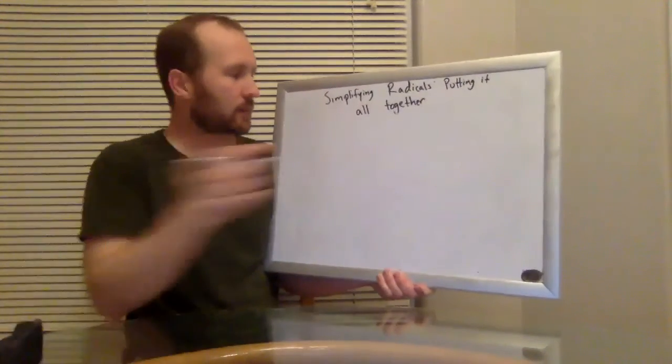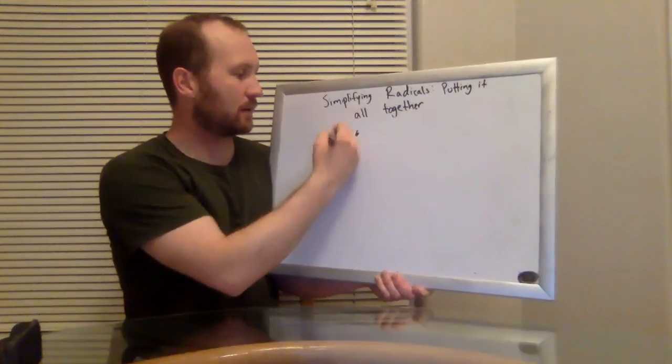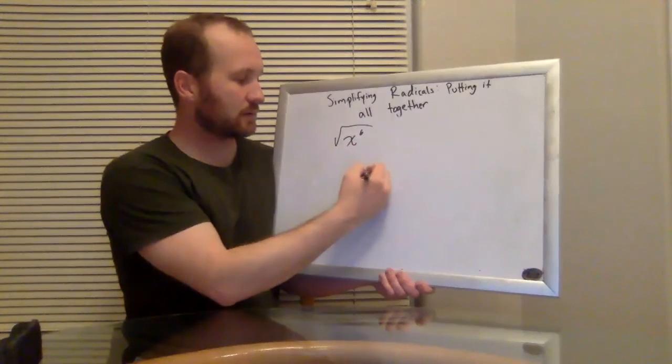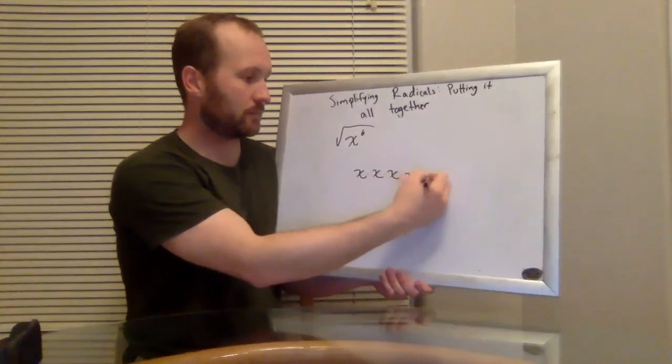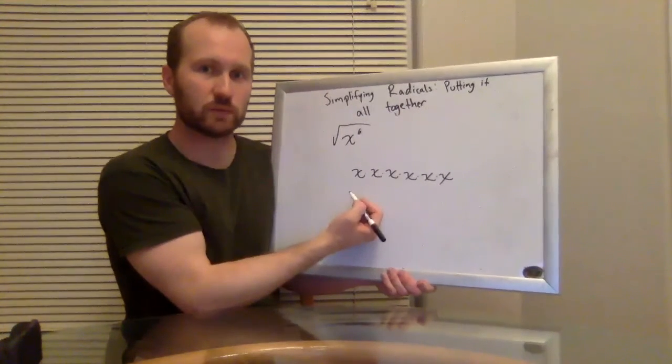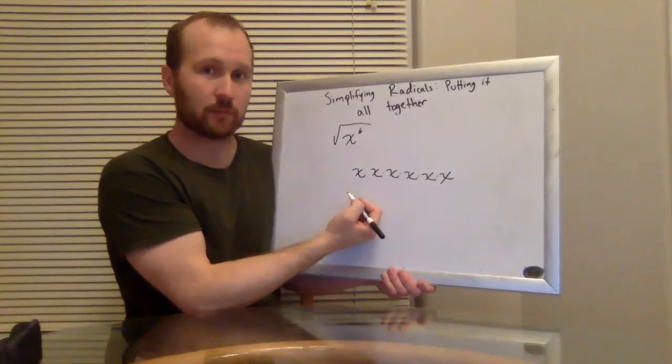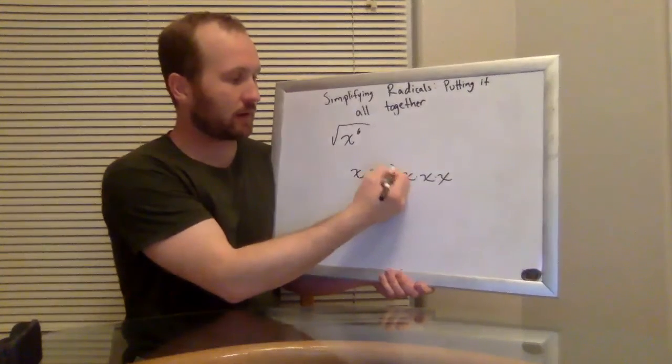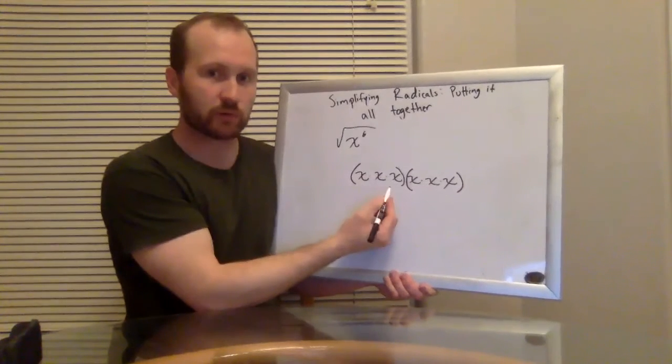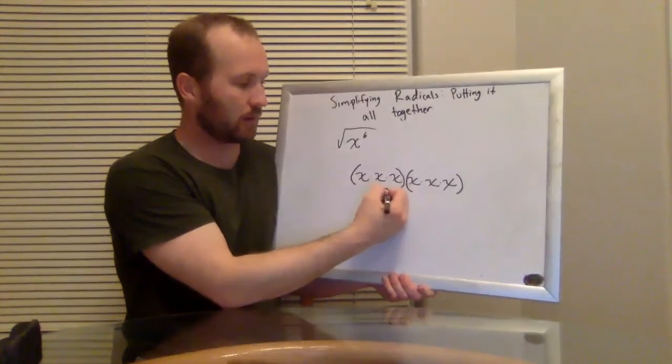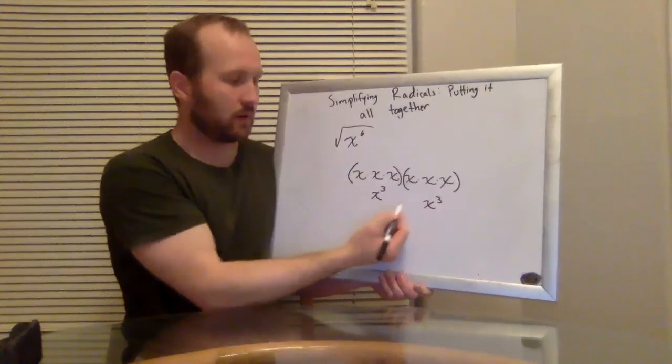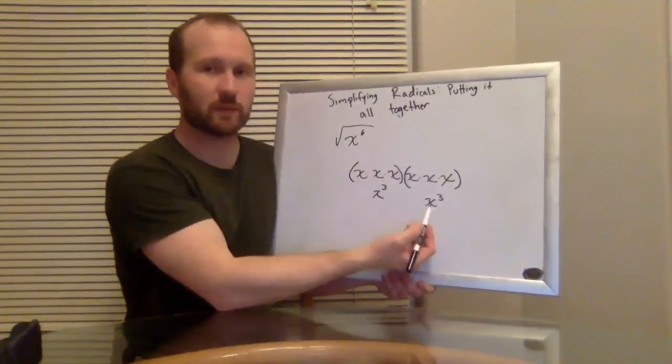So I'm basically trying to ask myself, well, x to the 6th is written out like this. Can I separate this into two groups that are exactly the same? And I can, right? Here's the first group. Here's the second group. What would I name this group over here? x to the 3rd. Then in this group, x to the 3rd. So x to the 6th is x to the 3rd times x to the 3rd.